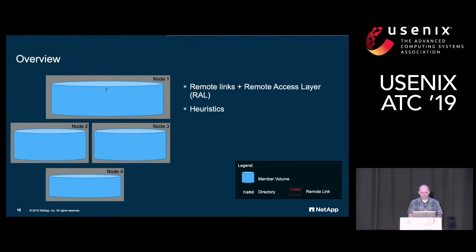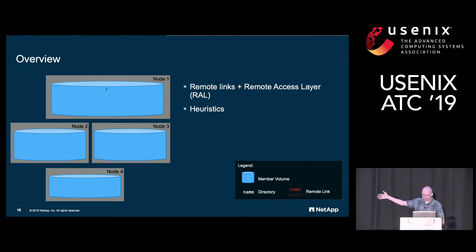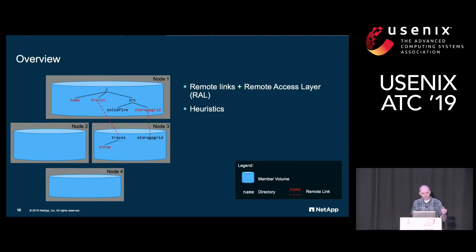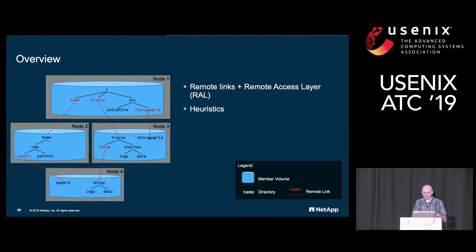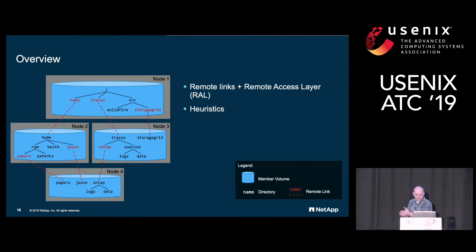To give an overview, take a simplified cluster with one volume per node — four volumes on four different nodes. The red nodes are remote links and the black ones are local. Even though the example looks like a tree, any remote link can point to any volume. As data comes in, heuristics determine whether it should be allocated remotely; if so, a remote link places the file or directory there. We'll now talk about these remote links and the remote access layer, or RAL, to ensure consistency for updates across nodes.